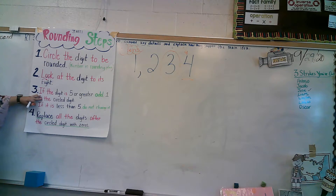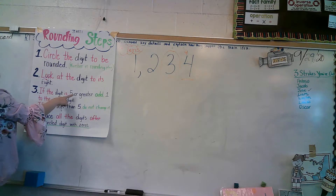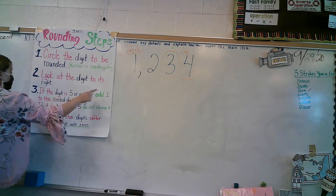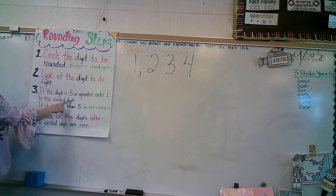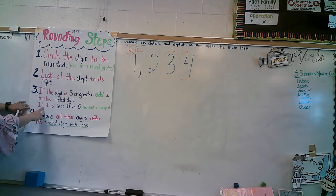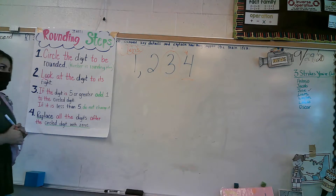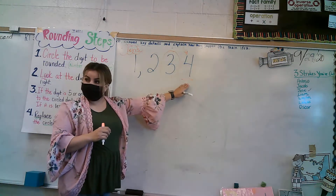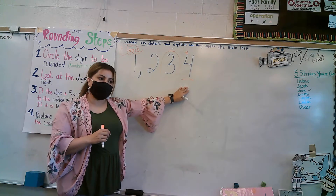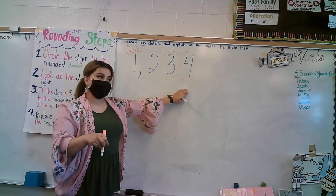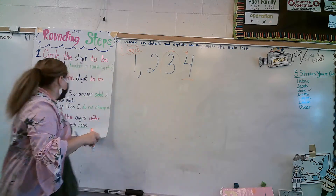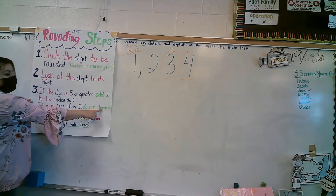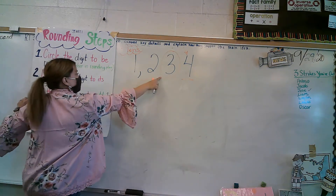Now I go to step three. If the digit is five or greater, add one to the circled digit. If it's less than five, do not change it. We're looking at this digit. Is four bigger than five or smaller? Smaller. So if it's smaller, I do not change the circled number.